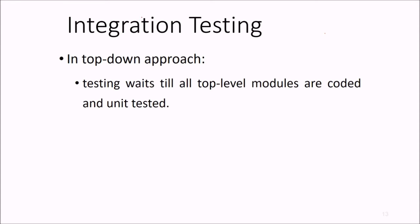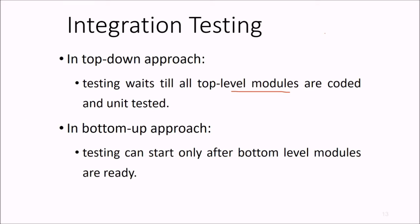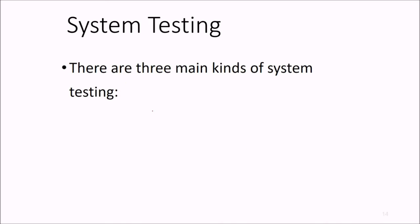In integration testing for top-down approach, we have to wait till all the top level modules are coded and unit tested because top-down approach emphasizes on testing the top level modules first. In bottom-up approach, testing can start only after the low level hierarchy modules are ready. When we talk about system testing which is the validation with reference to the requirements, there are three main kinds of system testing.